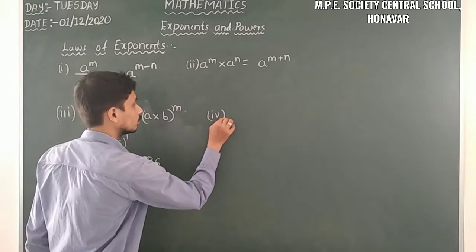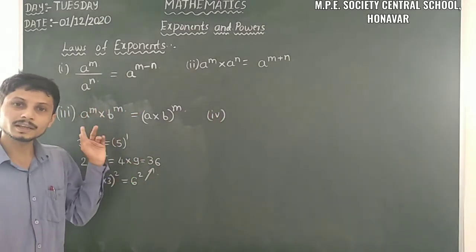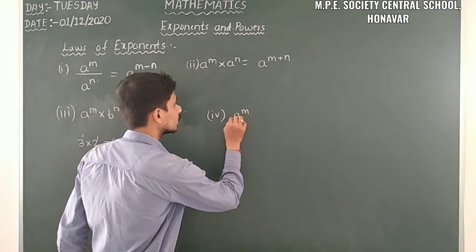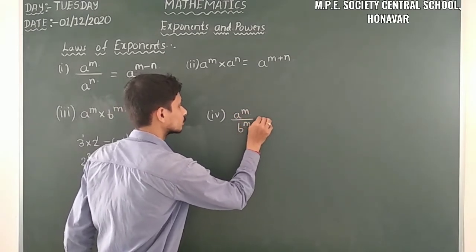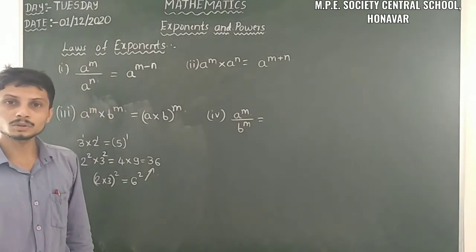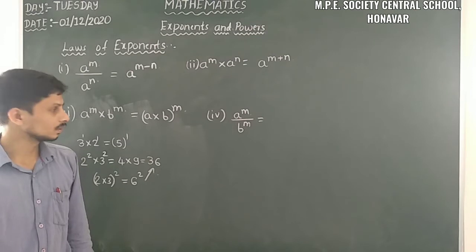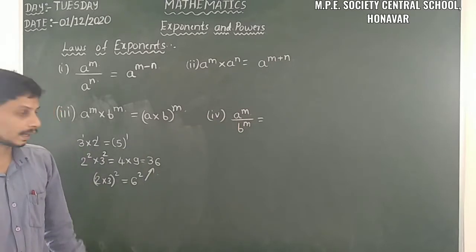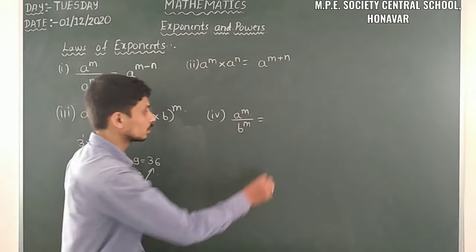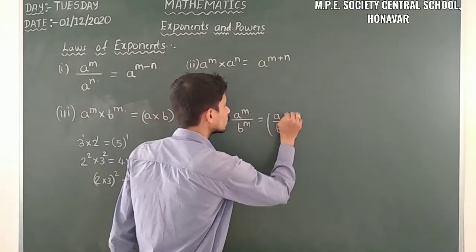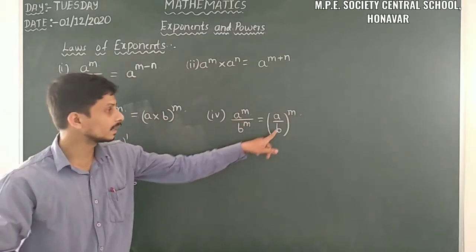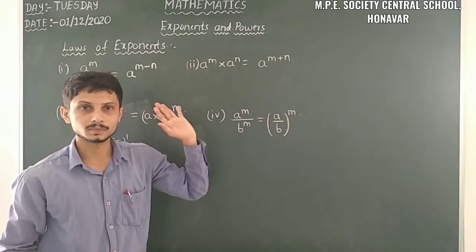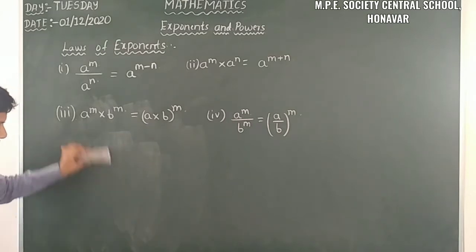Now let us take the fourth law. Here we have division. So a raised to m divided by b raised to m is equal to (a divided by b) whole raised to m. Just as multiplication gives (a × b)^m, division gives (a/b)^m. We first divide a and b and then take the exponent — the answer will be the same. This is the fourth law of exponents.